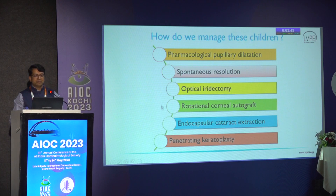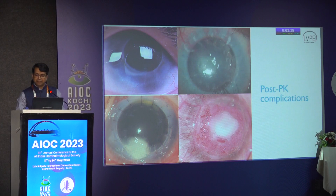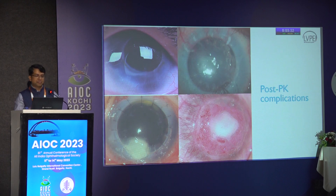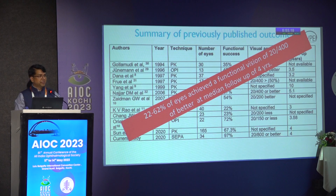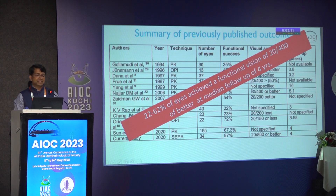Conservative approaches are used in milder cases, and penetrating keratoplasty only for severe cases. However, considering the longevity — the lifespan of a child who undergoes keratoplasty — they often end up with abysmal outcomes. The last 40 years have shown very poor results; LV Prasad data showed less than 22 percent of cases had a clear graft at the end of two years, and functional visual outcomes are extremely poor as well.